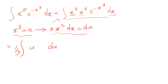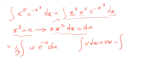And instead of e with the power of minus x³, I write e with the power of minus u, because x³ is equal to u. So now this integral becomes the integral of u times e with the power of minus u times (1/3) du, which I can solve using integration by parts.